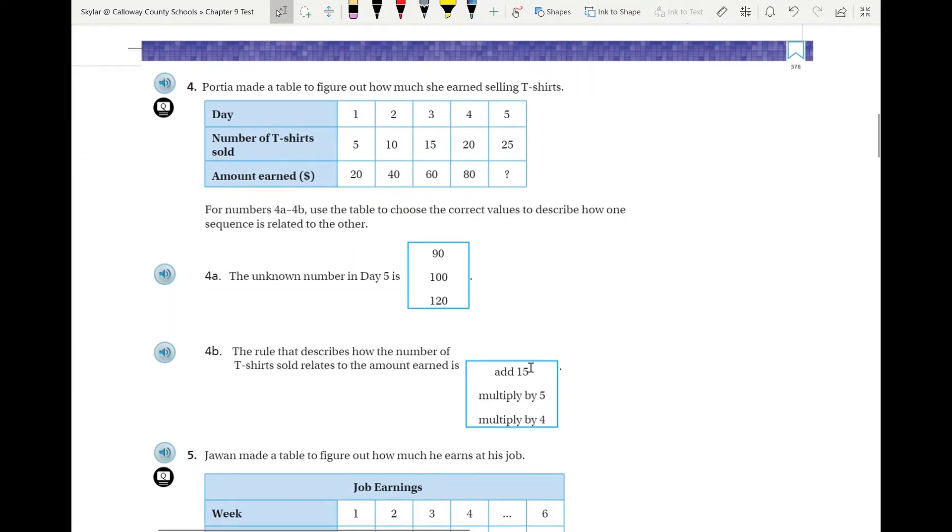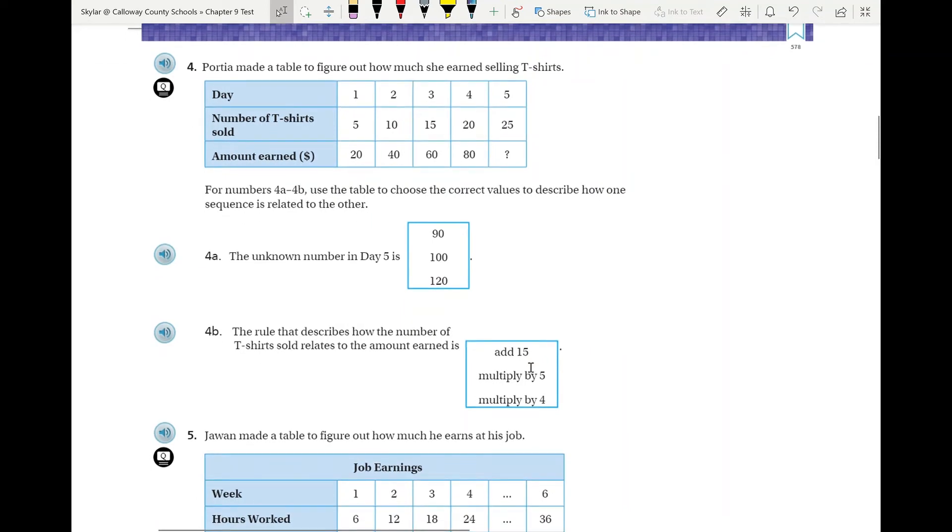Moving right on along, number four. Use that table. You need to be able to figure out the correct values and describe how one sequence is related to another. So the first thing you need to do for this sequence is find out what your rule is. In here, for example, we see that we go from a 20 to a 40, so you need to find out what is your rule to get from a 20 to a 40, what do you have to do? And then you need to do that same thing to get from a 25 to that, and then that'll give you the answer for your unknown, as well as describing that rule.